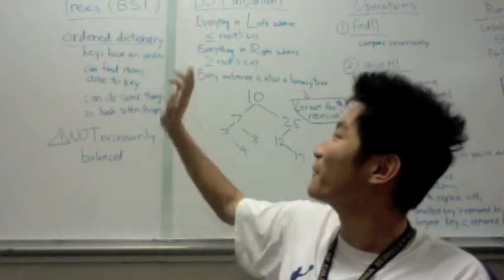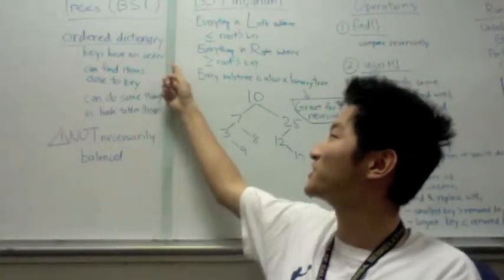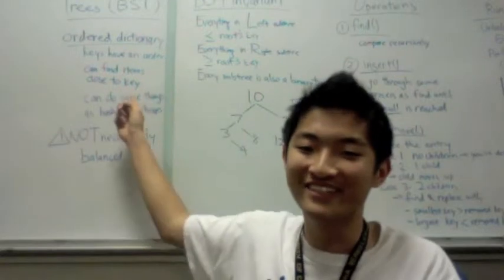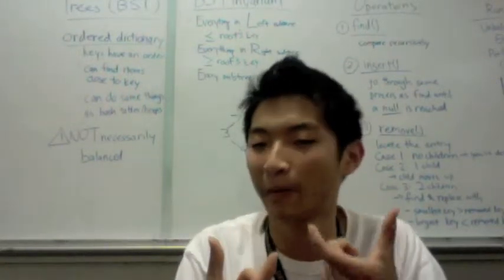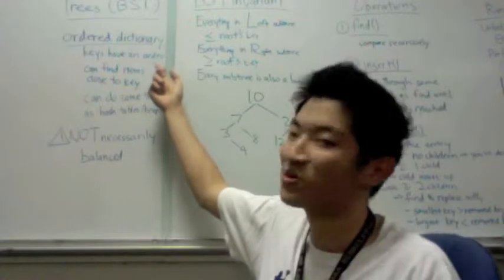So first of all, a binary search tree is an ordered dictionary. That means keys—you know how dictionaries have a key and entry pair? Well, keys have an order now.